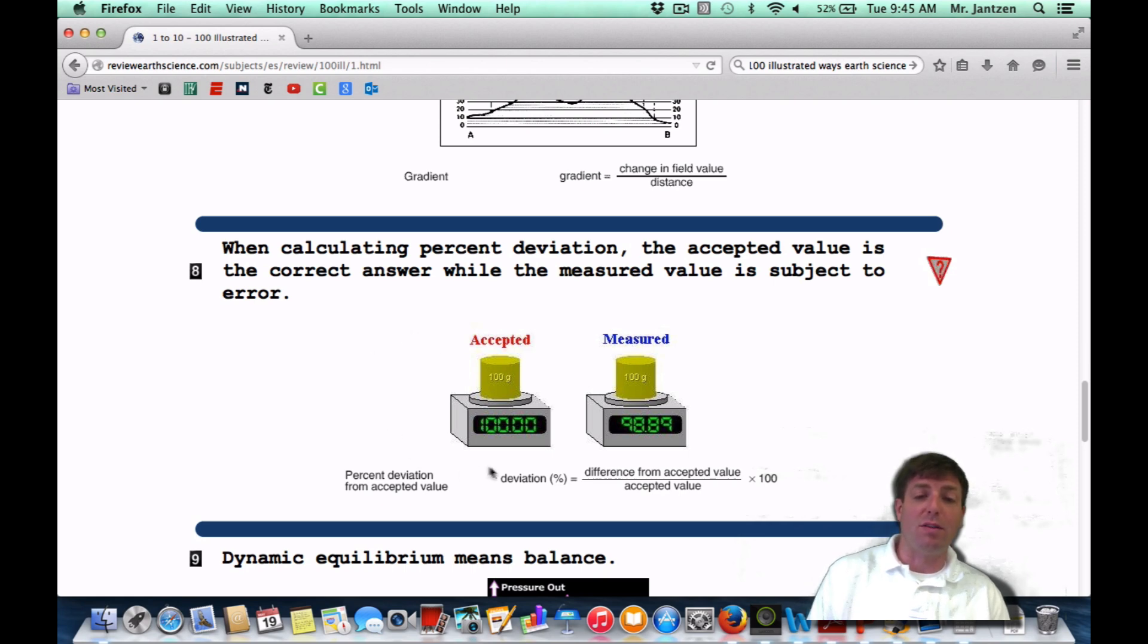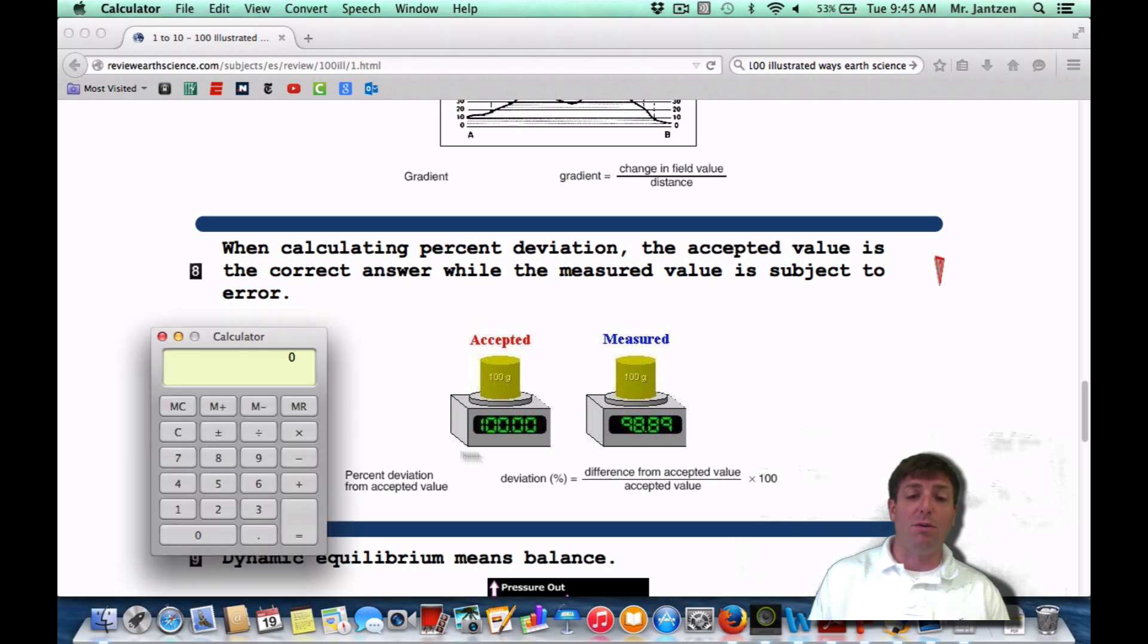So students get confused when they see difference from accepted value in the numerator. What does that mean? Well, they just don't want anything negative in the numerator position. So all you're going to do in the calculator is first put the biggest number, and then subtract it from the smallest number. So you're going to take your 100 and you're going to subtract 98.89.